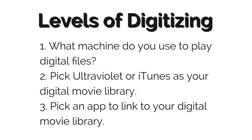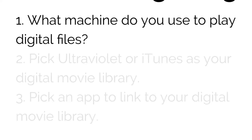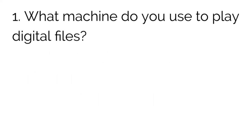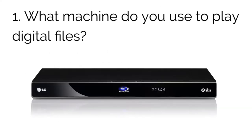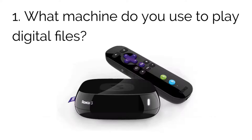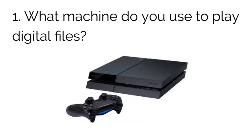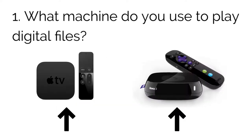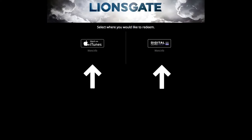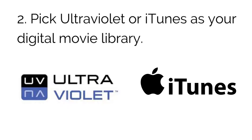Now let's get into the apps. There are three levels to this. Step one: what machine do you use to watch your movies? A Blu-ray player, a Roku, an Apple TV, a PlayStation? Whatever you normally watch on might decide what program you should use.